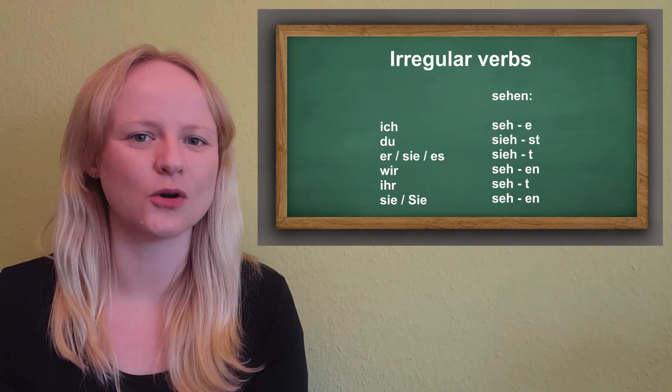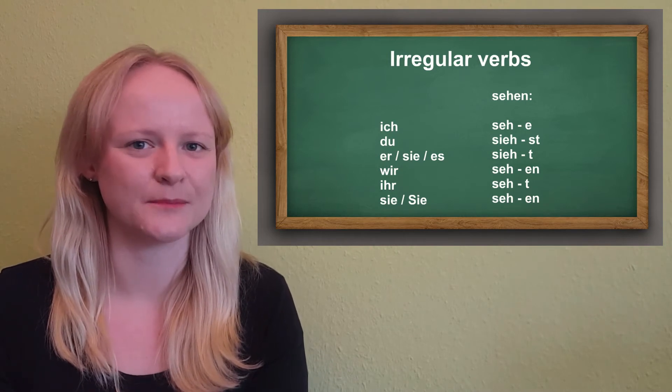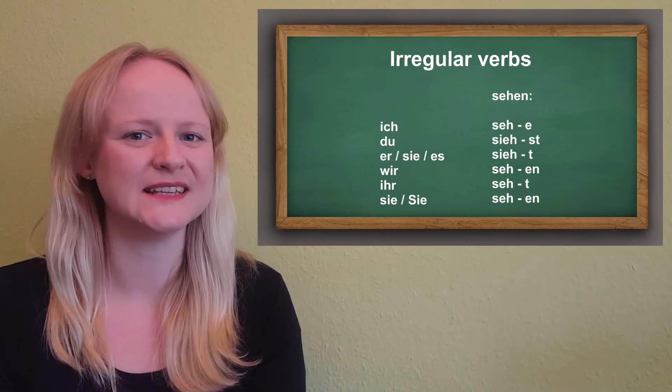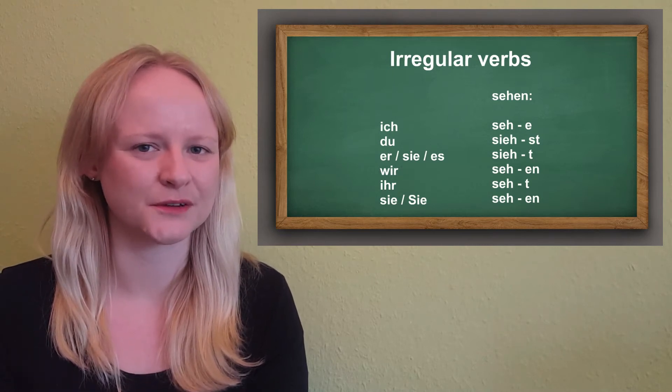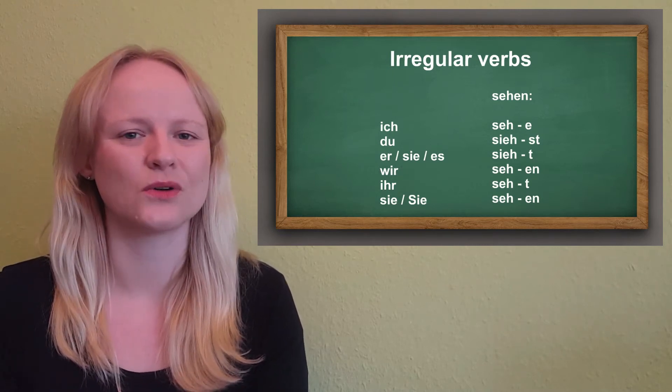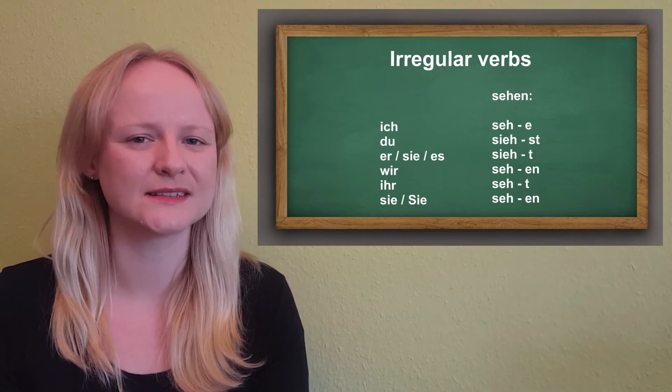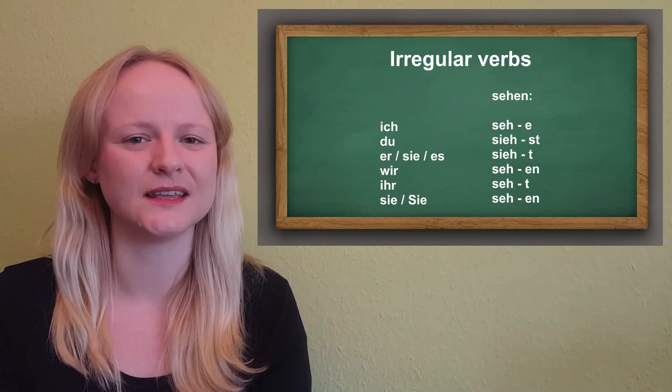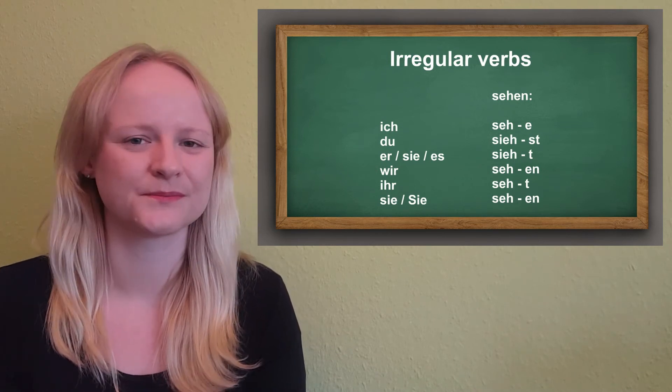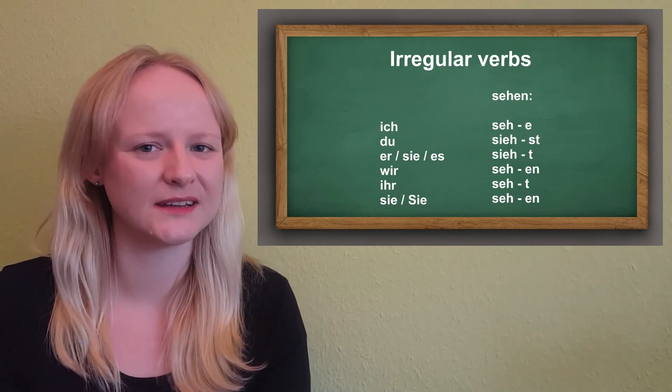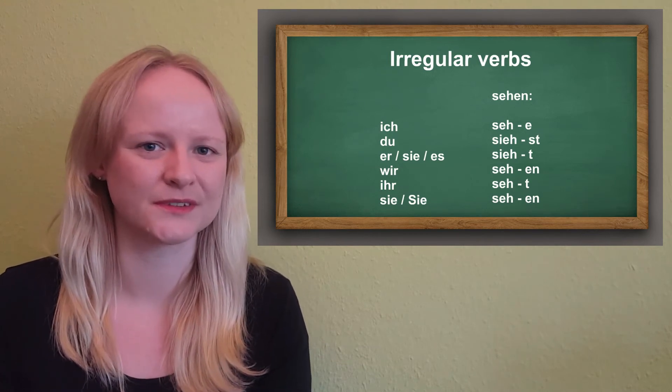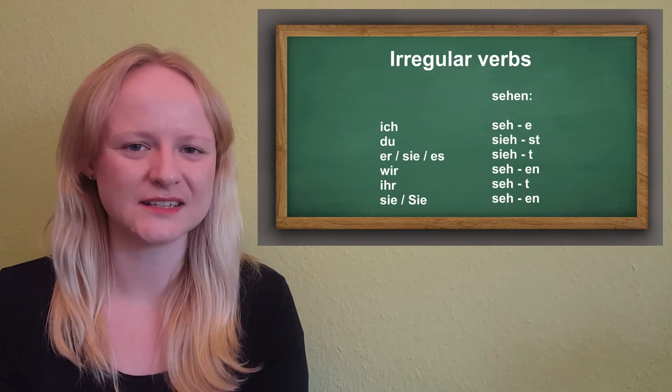Sehen, to see or to watch, has the verb stem SEH. But you can see that the stem changes to SIEH for the second and third person singular. So ich sehe, du siehst, er sie es sieht, wir sehen, ihr seht, sie sehen. So the irregularity is in the stem of the du and er sie es forms.